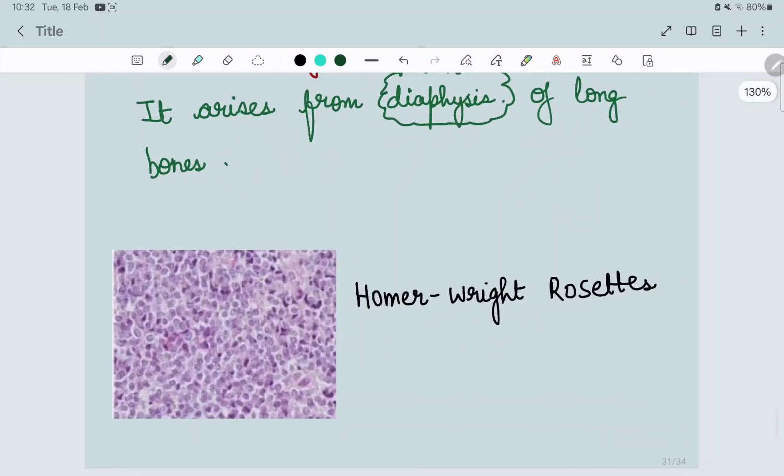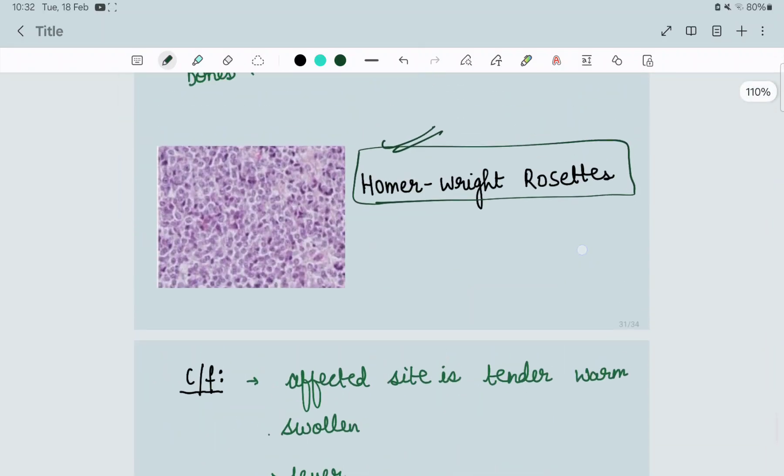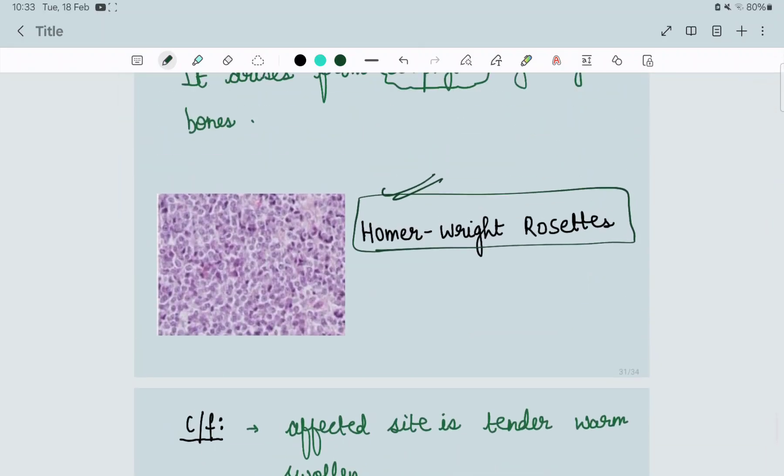These are small round cell tumors which are known as Homer-Wright rosettes. On x-ray it shows onion skin pattern. I used to get confused - in which you see Homer-Wright, in which onion skin? In home we cut onion, so Homer-Wright will be seen in Ewing's, and in Ewing's you have onion peel pattern.